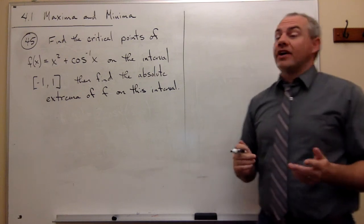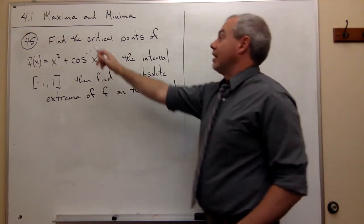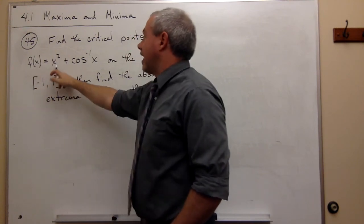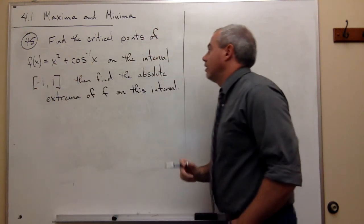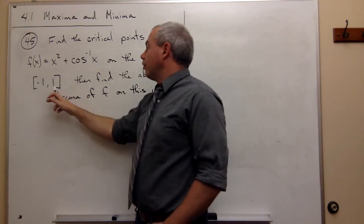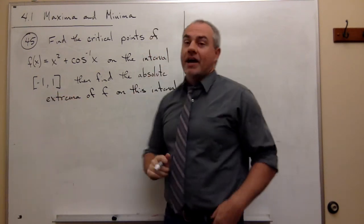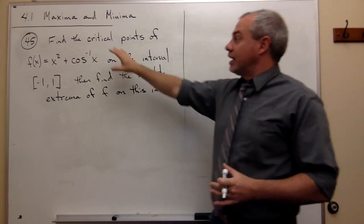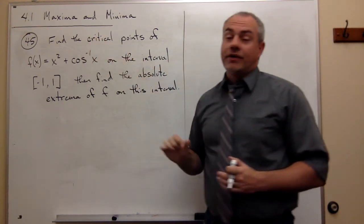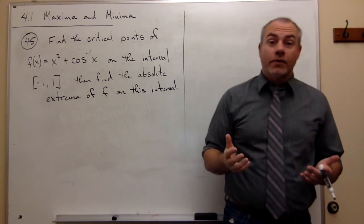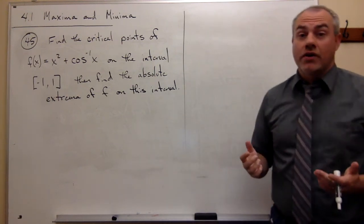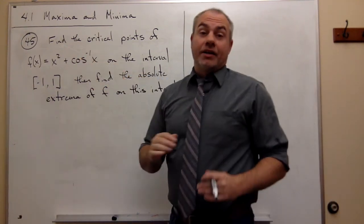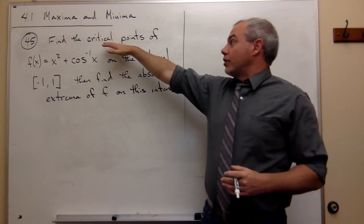In problem number 45 we have a similar situation. We're trying to find critical points of a function — that function being x squared plus cosine inverse of x on the interval negative one to one — and then we want to find the absolute extrema of that function. The first thing we want to do is take the derivative of f and find out where the derivative is zero and where it is undefined. That will give us our critical points.